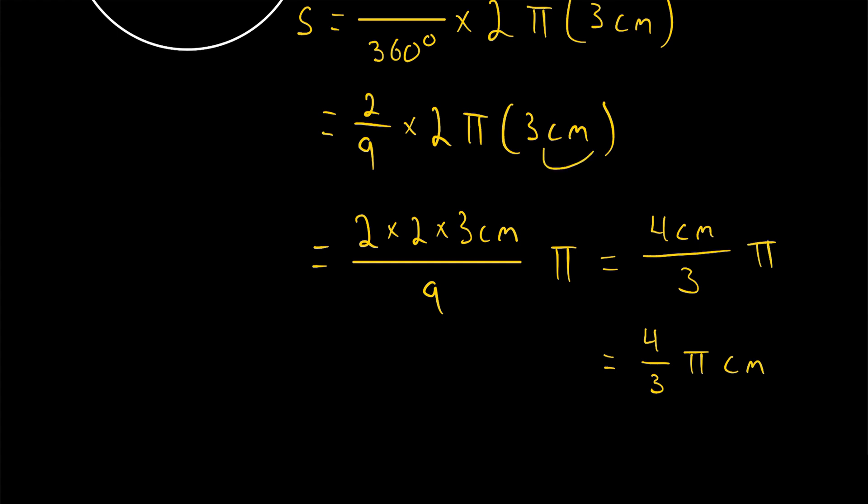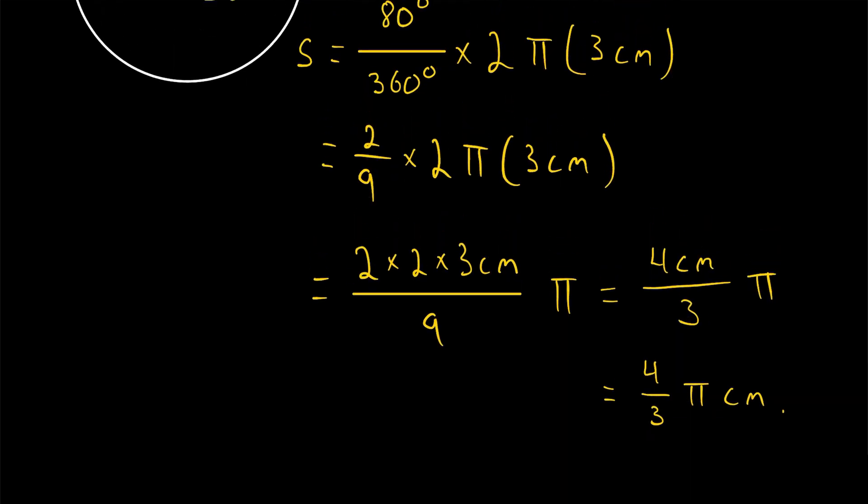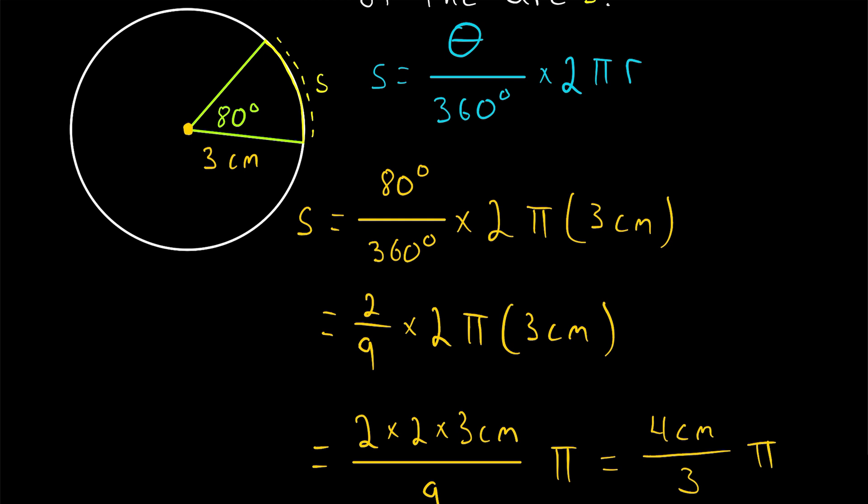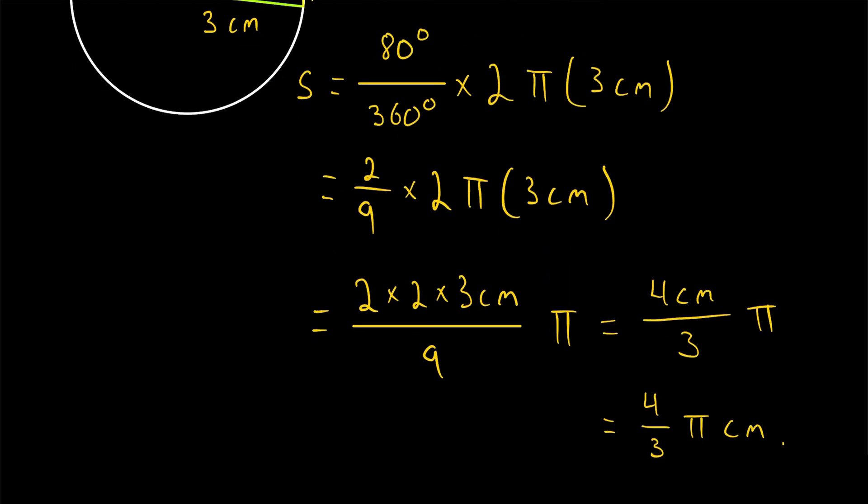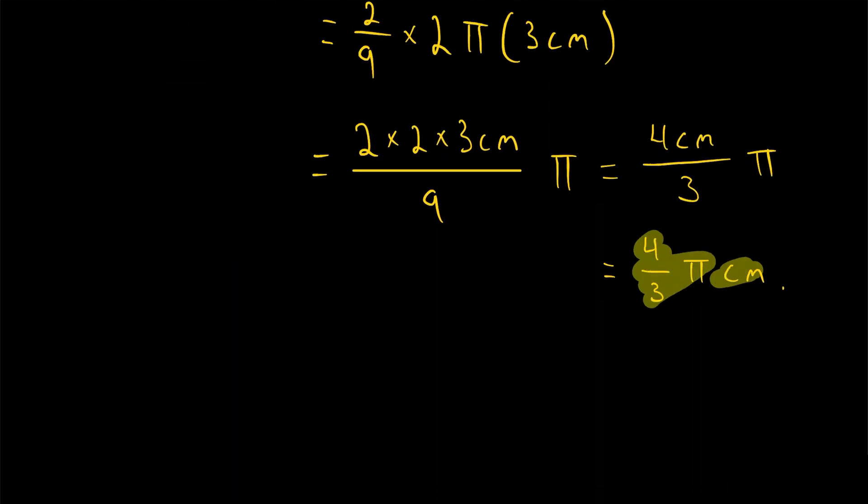Really, we could have just left centimeters at the end of the expression all the way up until this step, where we get our final answer. So we see, in a circle that has a radius of 3 centimeters, a central angle with a measure of 80 degrees will cut an arc that has a length of 4 thirds pi centimeters.